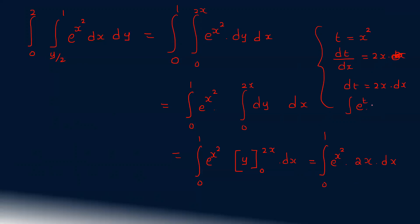So we get the integral from 0 to 1 of e raised to x squared times 2x dx. This evaluates to [e raised to x squared] from 0 to 1, which equals e minus 1.